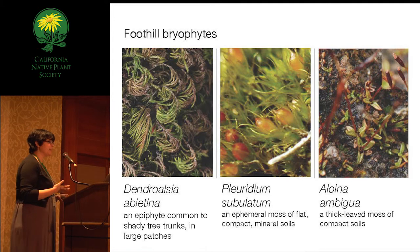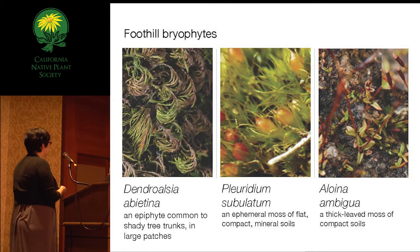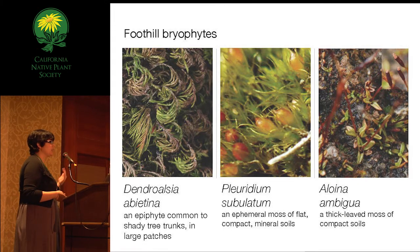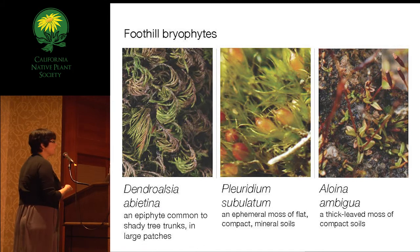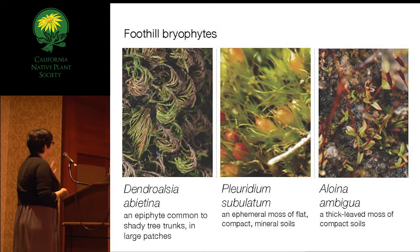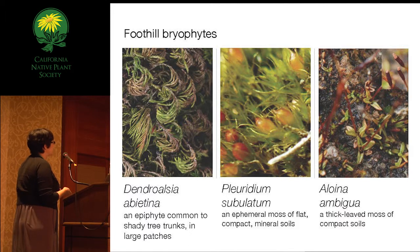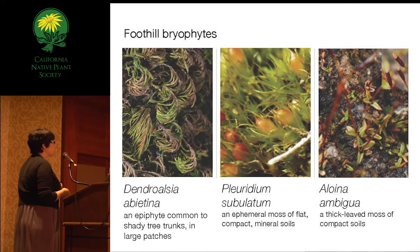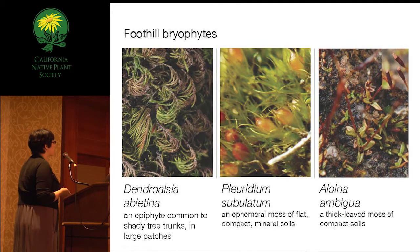Back to species descriptions: Paul and I photographed at least 100 common species along the gradient. I'll show nine of them grouped by elevation region. In the foothills, we have Dendroalcea abitina—a large moss found on oak trunks in oak woodlands that curls when dry. Then Pleuridium subulatum, an ephemeral moss with tiny orange sporophytes you might see along a flat trail. And Aloina ambigua, a thick-leaf moss found in compact soils in the foothills.